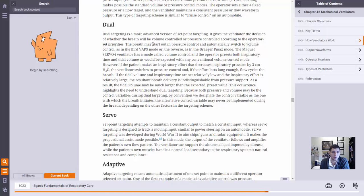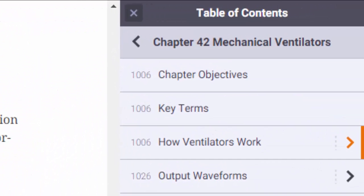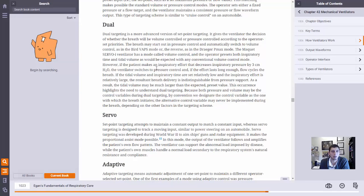As you can see here, this actual textbook is Egan's Respiratory Care or Fundamentals of Respiratory Care, 10th edition, author is Kaz Merrick. I'm just in this section here on mechanical ventilation, chapter 42.